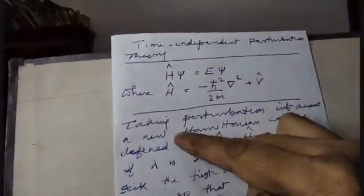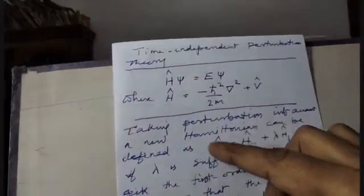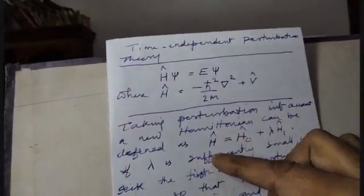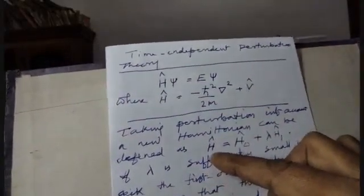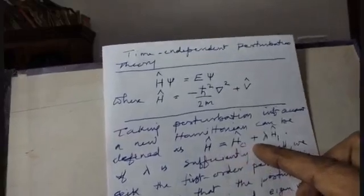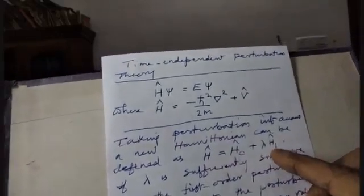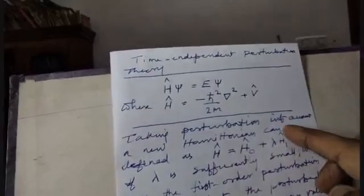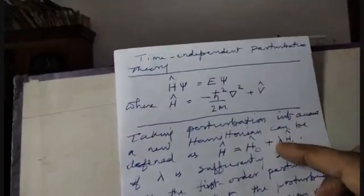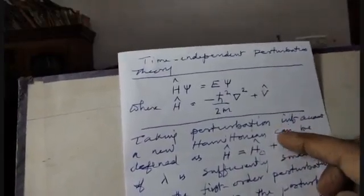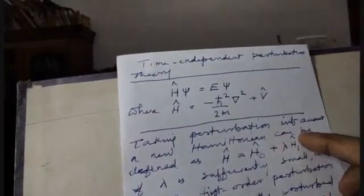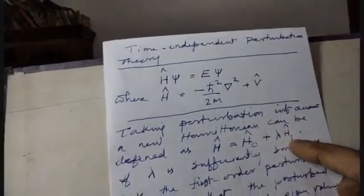Taking the perturbation into account, a new Hamiltonian can be defined as H equals H0 plus lambda H1. Here lambda H1 is the perturbation term added to the Hamiltonian operator.